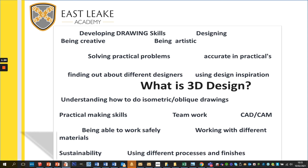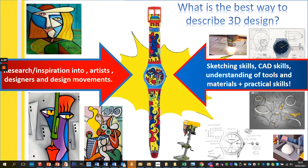The next slide is the best way to describe 3D design. On one side it does have a very art-based element — you will look at art movements, particular artists and particular pieces of work. Looking into designers and design movements, you do research on it, you'd pick out bits that you like and see what kind of things inspire you, and bring them into your drawings. The other element is sketching skills, computer-aided drawing skills, and understanding of tools, materials and practical skills.